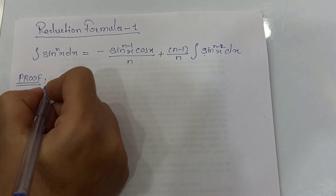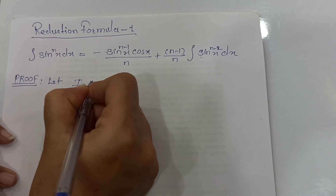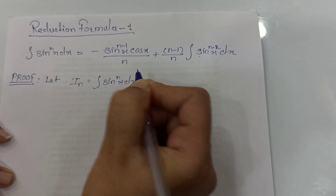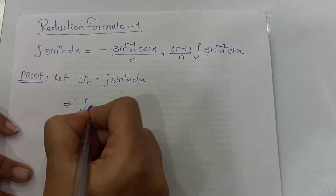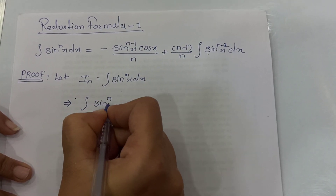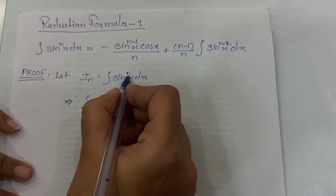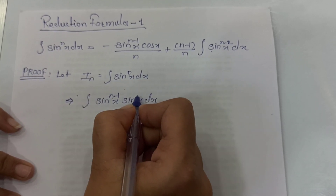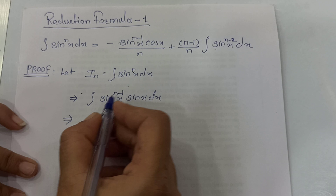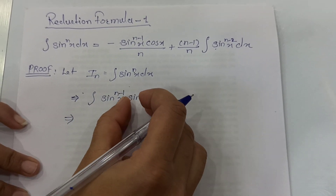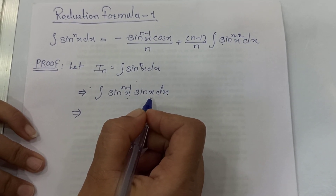Let's prove this formula. Starting with the left hand side, that is integration of sin raised to n x dx, I am calling this integration to be In. Initially, I will break the power n into two parts: n minus 1 and 1. To this integration, we will apply integration by parts, taking sin raised to n minus 1 x as the first function and sin x as the second function.